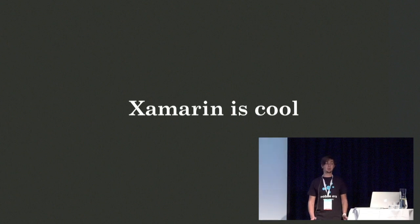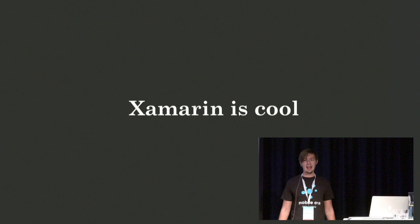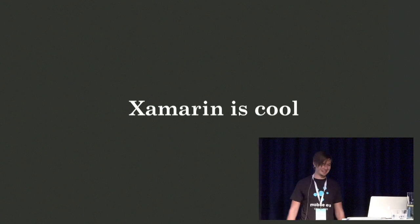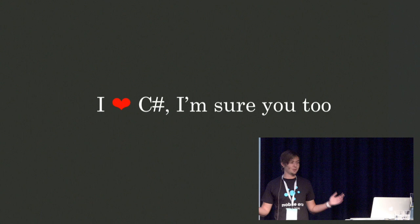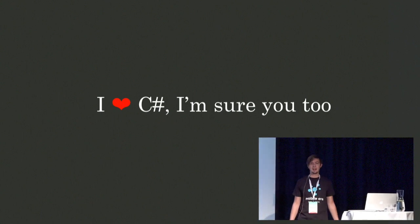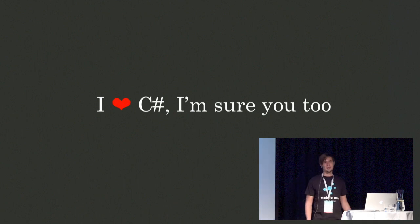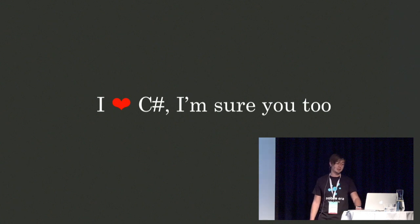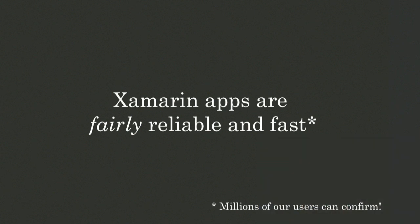Despite the name of the topic, Xamarin is actually pretty cool too. You literally can have an application which has millions of users. It really can solve your problems, and in many cases it might be the solution. Why Xamarin? C# is just great. It's modern, it evolves, it's just a perfect language. It's so much better than Objective-C, and our application started in the early days when Swift wasn't there, so C# was so appealing with all the syntactic sugar. It's fairly reliable, it's fast. We have millions of users, our rating is 4.7, and people don't complain that much about performance.